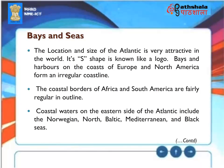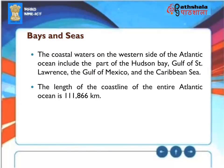Bays and Seas: The Atlantic's S-shape is known like a logo. Bays and harbors on the coasts of Europe and North America form an irregular coastline, while the coastal borders of Africa and South America are fairly regular. Coastal waters on the eastern side include the Norwegian, North, Baltic, Mediterranean, and Black Seas. On the western side, they include part of Hudson Bay, Gulf of St. Lawrence, Gulf of Mexico, and the Caribbean Sea. The total length of the Atlantic coastline is 111,866 kilometers.